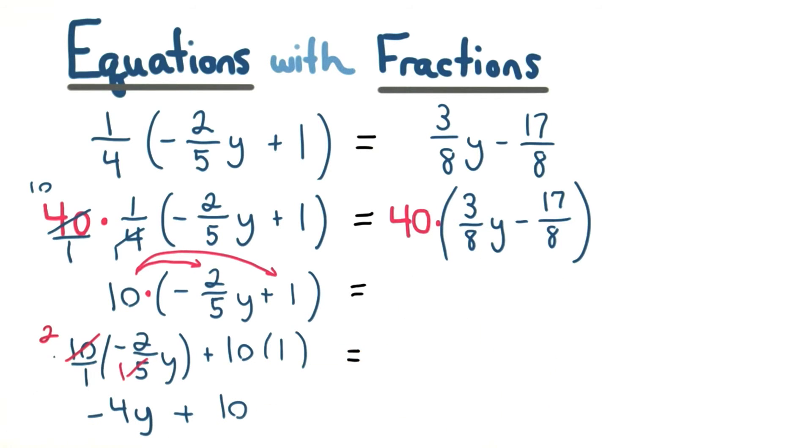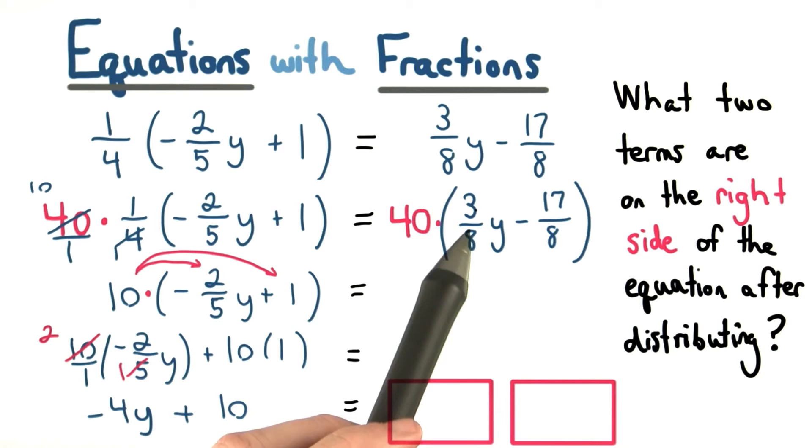Try doing that on this side. If you carry out the distribution on the right side, what terms would you get down here? Be sure you enter a number and a variable in the first box, and a number in the second box. You'll also want to include both of their signs. If the term is negative, be sure to type a negative sign in front of your answer. Good luck.